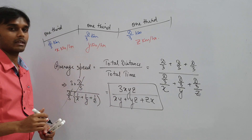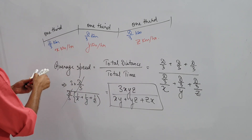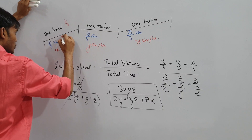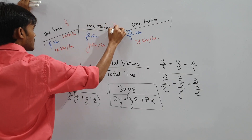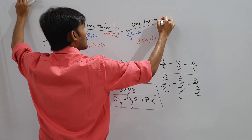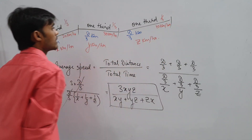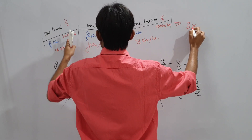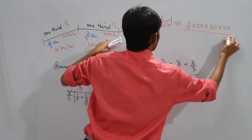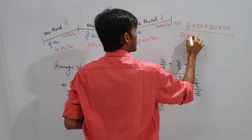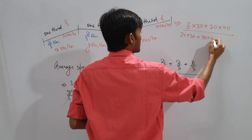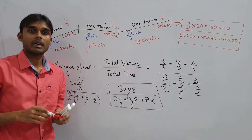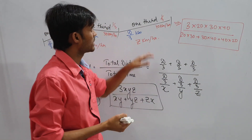This is a slightly calculation-heavy question but it does appear in exams. For example, if one-third of a journey is at 20 kmph, next one-third at 30 kmph, and last one-third at 40 kmph, apply the formula: 3×20×30×40 divided by (20×30 + 30×40 + 40×20). Cancel out zeros and compute — this is your final answer. This is the next type of question based on average speed.